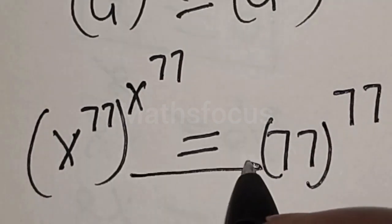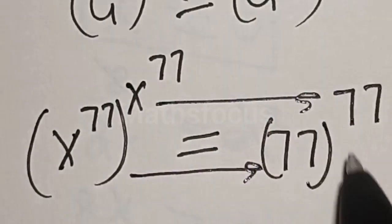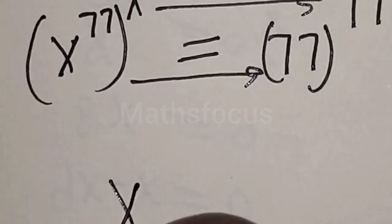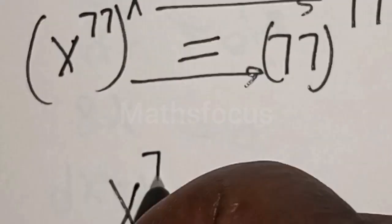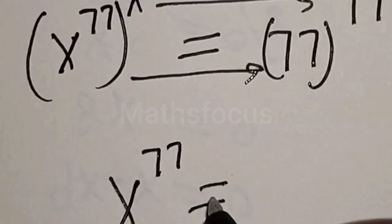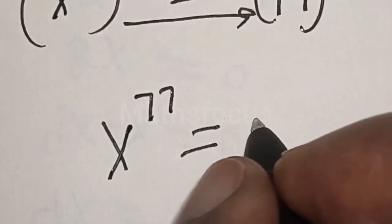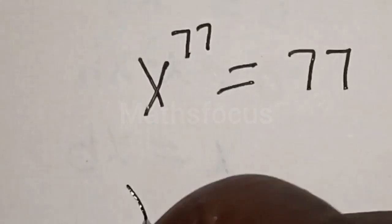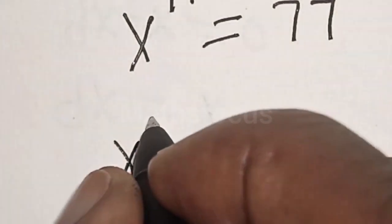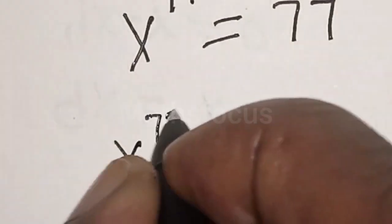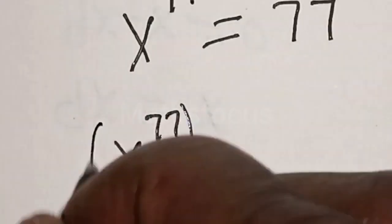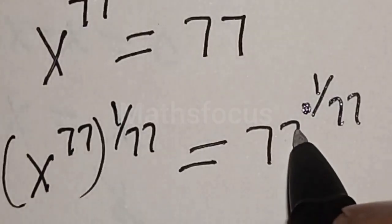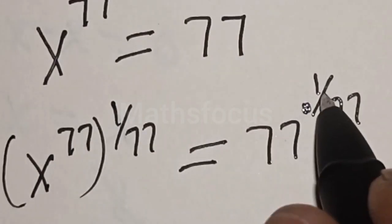By comparing both sides — this side equals this side, and this part equals this part — therefore s raised to the power 77 is equal to 77. Then raising both sides to the power 1 over 77, we get s raised to the power 77 times 1 over 77 is equal to 77 raised to the power 1 over 77.